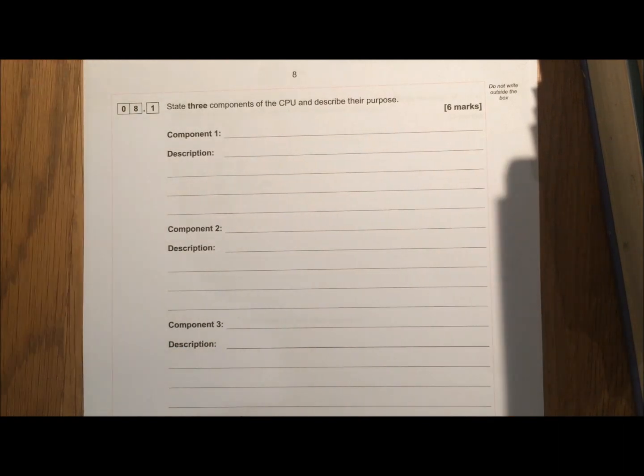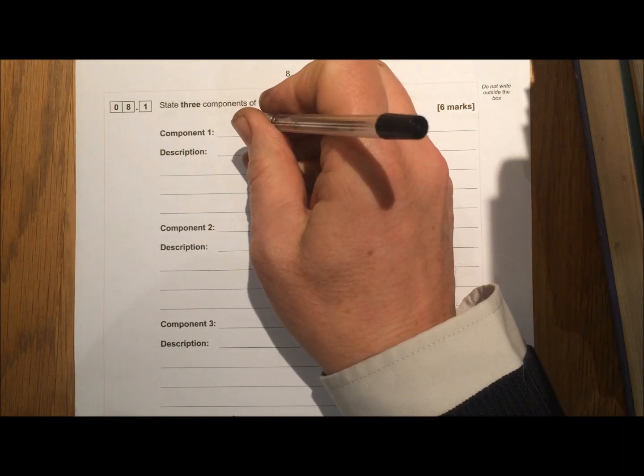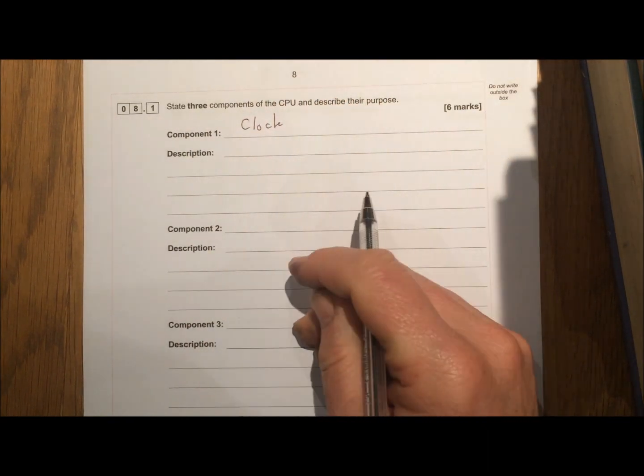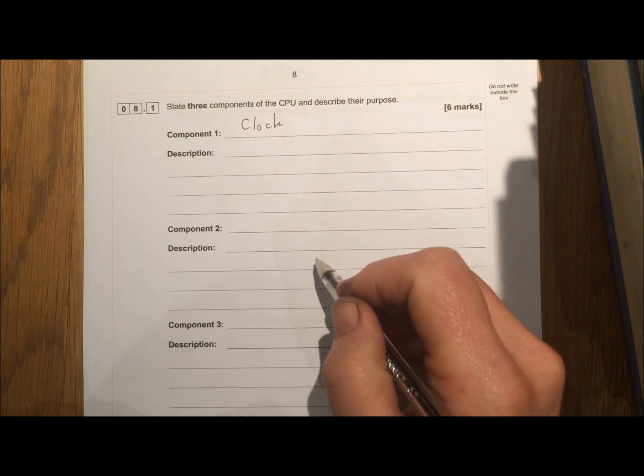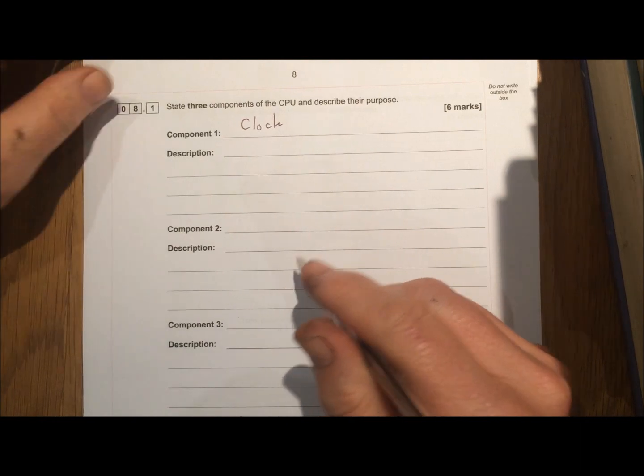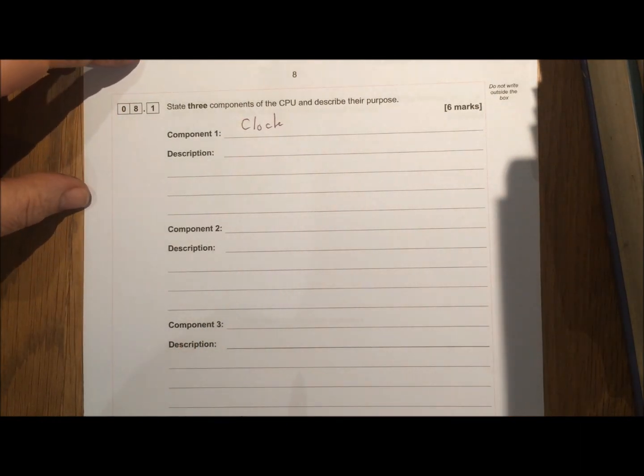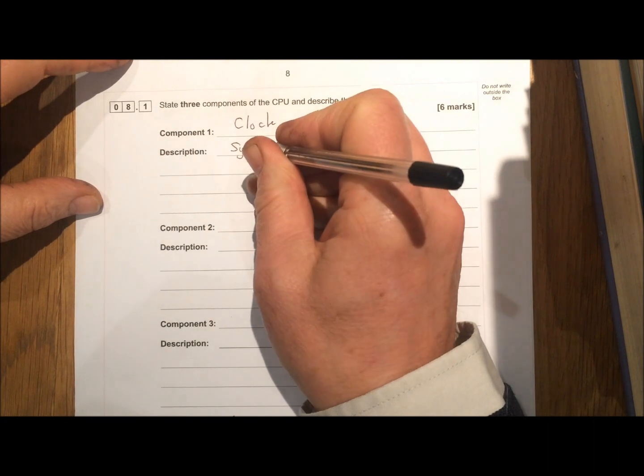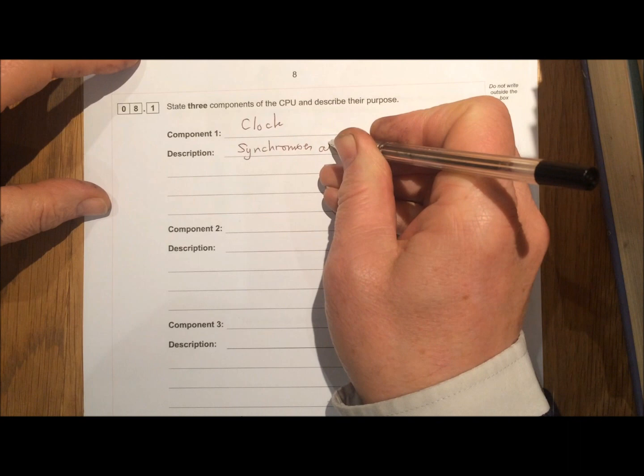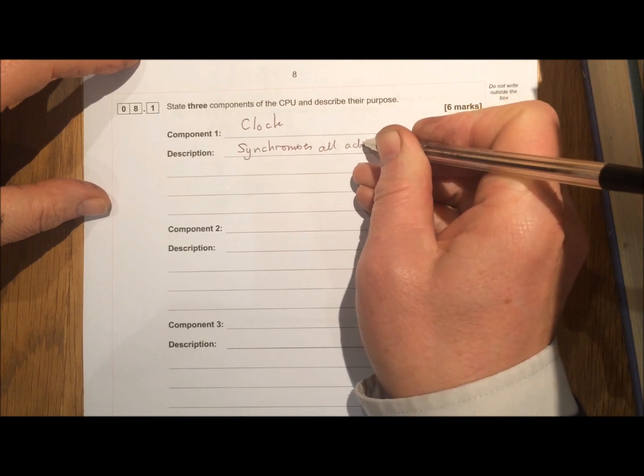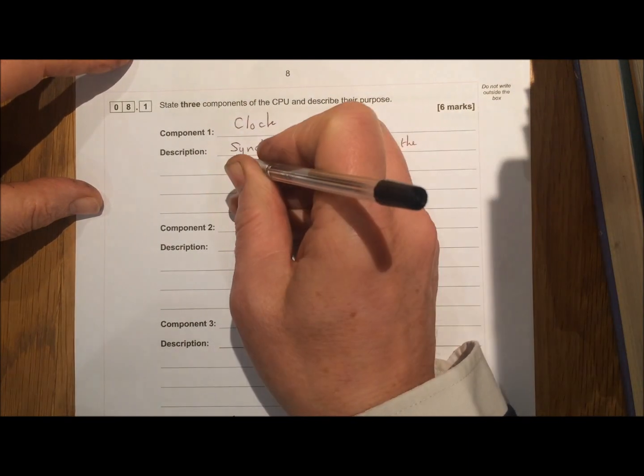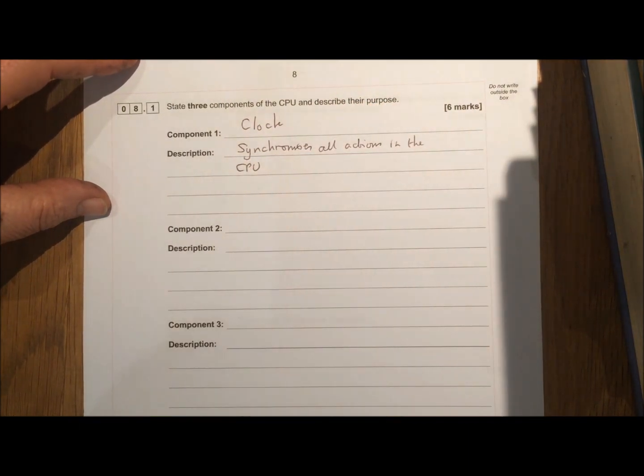So let's start with some parts we may deal with. So first one that's obvious is the clock. So remember a CPU has a clock and each time that ticks it causes a new action to take place. So it causes everything inside the CPU to be synchronized. So if I put something down like synchronizes all actions in the CPU, that will get me a mark.